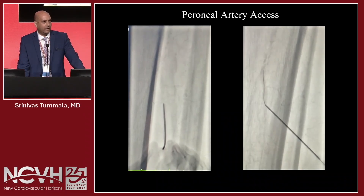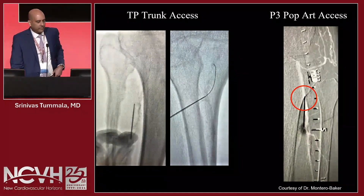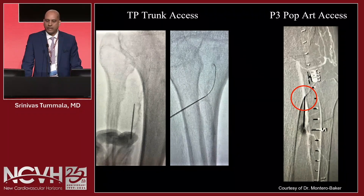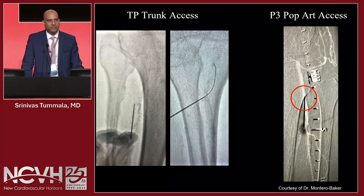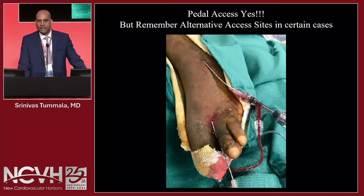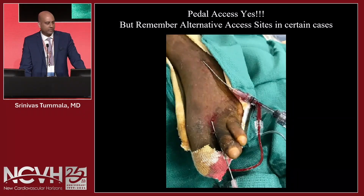Pedal access — DP, AT, and PT — is something we all know. These slides from Miguel Montero Baker, a vascular surgeon in Houston, cover TP trunk access and P3 access, which can be done safely. But remember, if you're unable to deliver therapy and you've accessed these vessels this proximally in the lower leg, the compartments are larger and your risk for compartment syndrome goes up. In limb salvage cases, I've used digital artery and really distal access for advanced limb salvage and no-options patients.